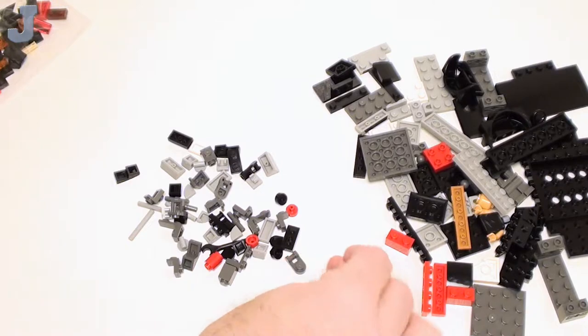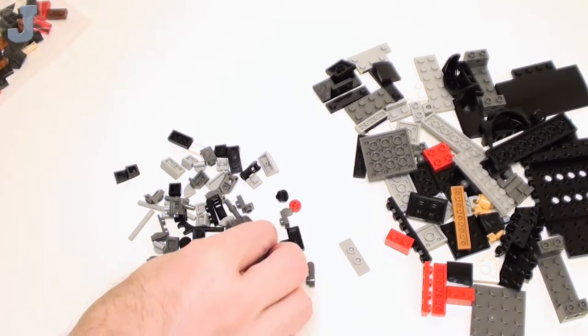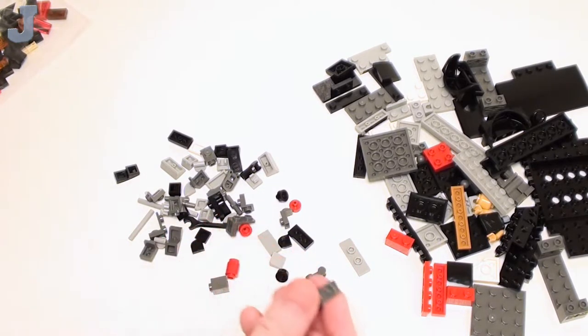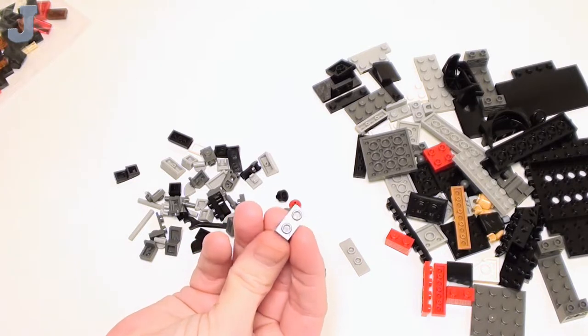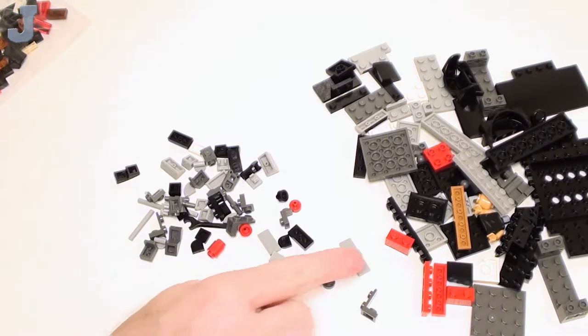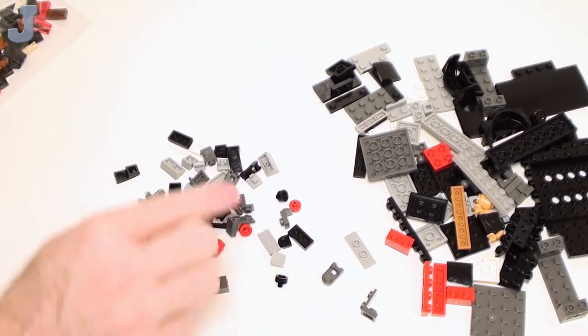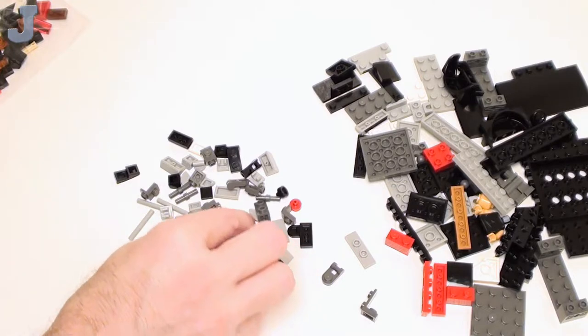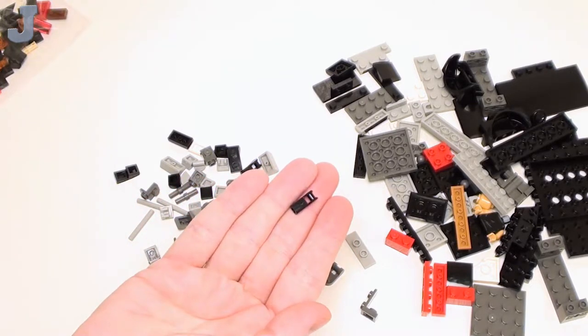So you obviously get a 1 by 3 jumper plate. And oh, one of these 1 by 1 by 2 upwards angular plates, pretty cool. And a round plate with stick, or a 1 by 1 round plate with stick. Get one of these.